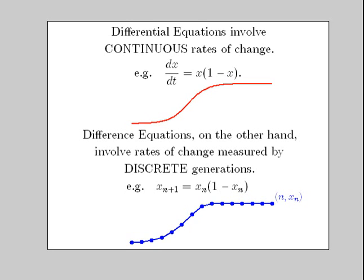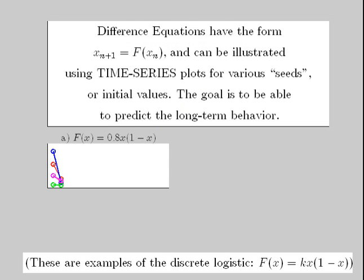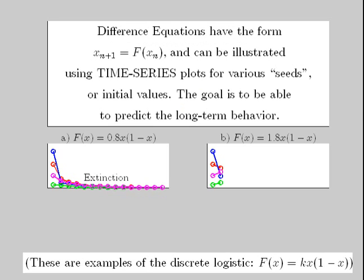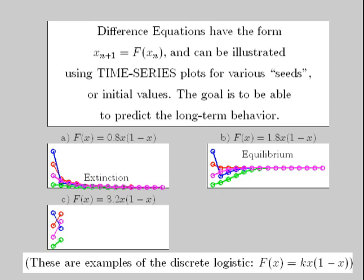Most difference equations have the next generation x_{n+1} functionally dependent on the previous generation x_n. In this way, x_1 = F(x_0), x_2 = F(x_1), and so on. Different seeds, or initial values, generate different orbits shown by the distinct colors in these time series plots.